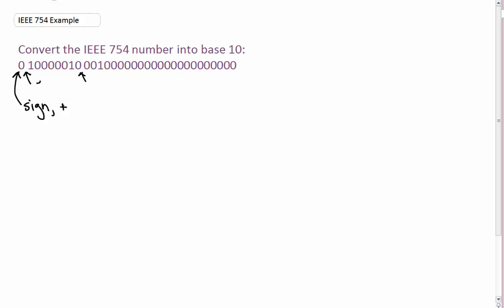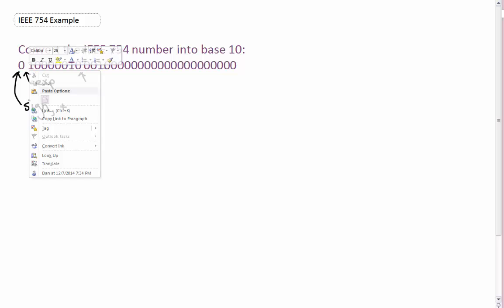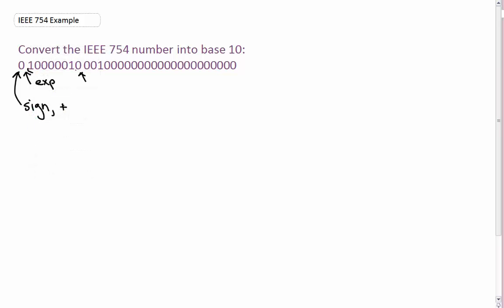And this is our exponent. From this one here to this zero here. That means that our exponent is 1 followed by what looks to be 5 zeros and then another one and then a zero. So that's 8 bits. That's good. Looks good.